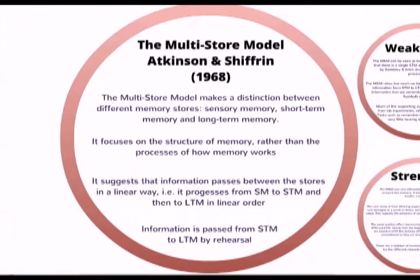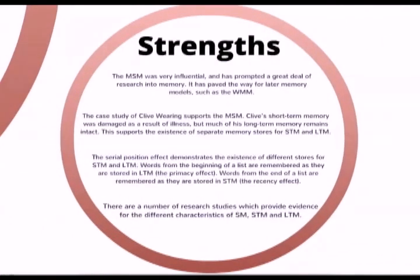Now we've looked at an overview of Atkinson and Shiffrin's model, let's have a look at some strengths and weaknesses of the model. One of the first strengths is that the multi-store model was very influential and has prompted a great deal of further research into memory. It's also paved the way for later memory models, such as the working memory model by Baddeley and Hitch. The case study of Clive Wearing supports the multi-store model as well — Clive's short-term memory was damaged as a result of illness, but much of his long-term memory remains intact, supporting the existence of separate memory stores.